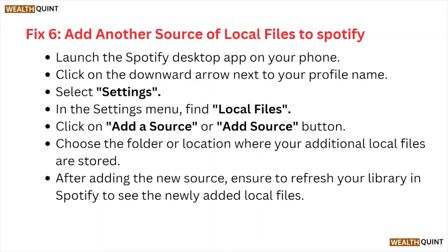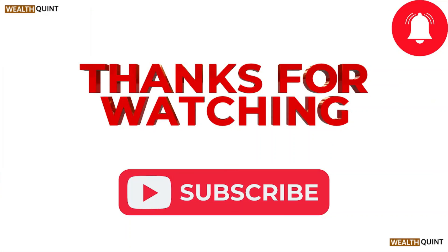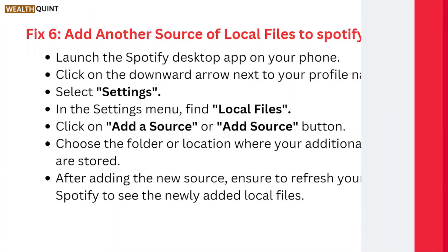Fix number six is add another source of local files to Spotify. Launch the Spotify desktop app on your phone, click on the Download arrow next to your profile name, and select Settings. In the Settings menu, find Local Files and click on Add Source. Choose the folder or location where your additional local files are stored. After adding the new source, ensure you refresh your library in Spotify to see the newly added local files.